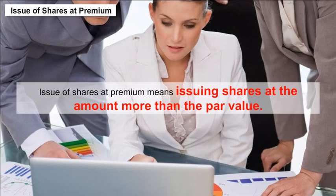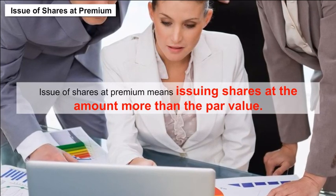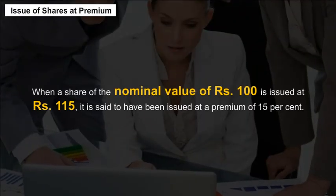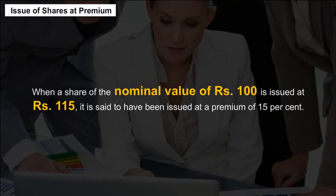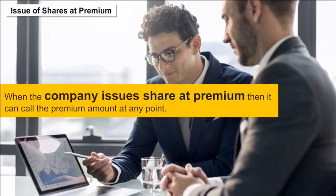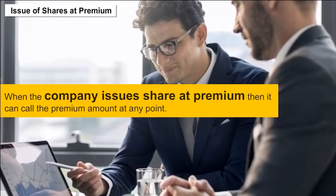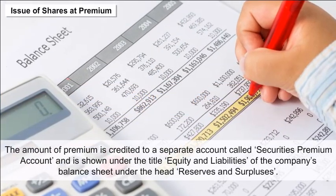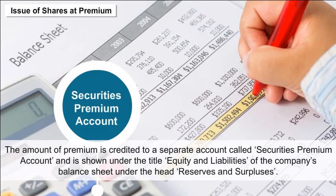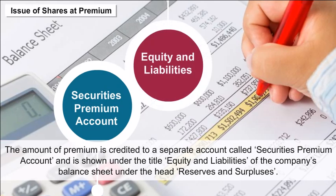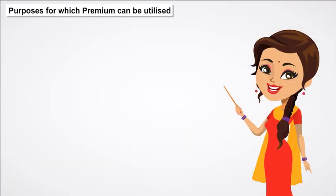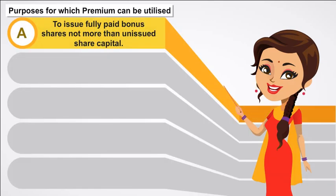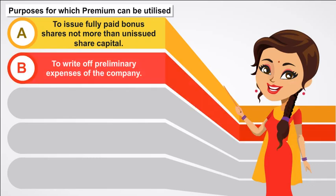Issue of Shares at Premium: Issuing shares at a premium means issuing shares at an amount more than the par value. When a share of nominal value of Rs. 100 is issued at Rs. 115, it is said to have been issued at a premium of 15%. The premium amount is credited to a separate account called the Securities Premium Account, shown under equity and liabilities of the company's balance sheet under reserves and surpluses. The premium can be utilized to issue fully paid bonus shares, write off preliminary expenses, write off commission or discount expenses, pay premium on redemption of preference shares, or purchase own shares.